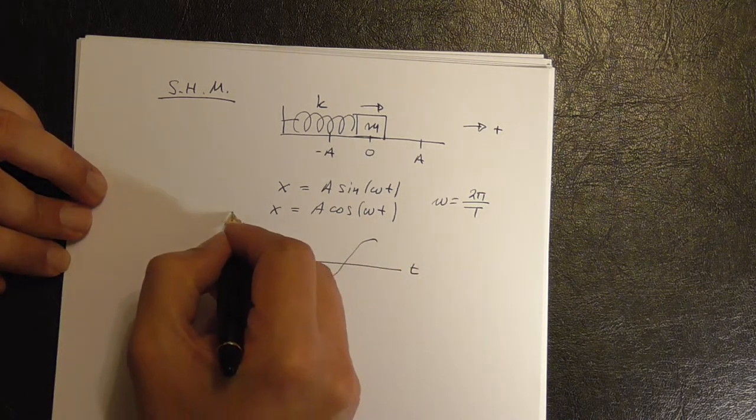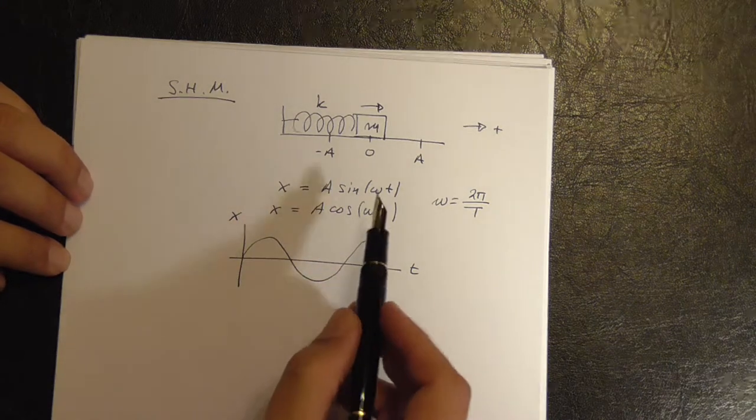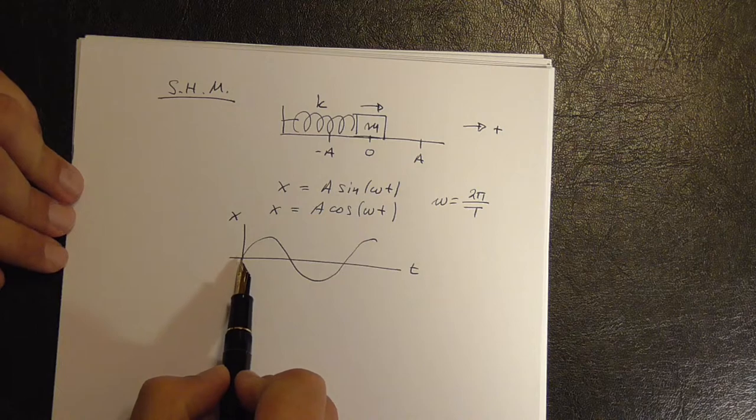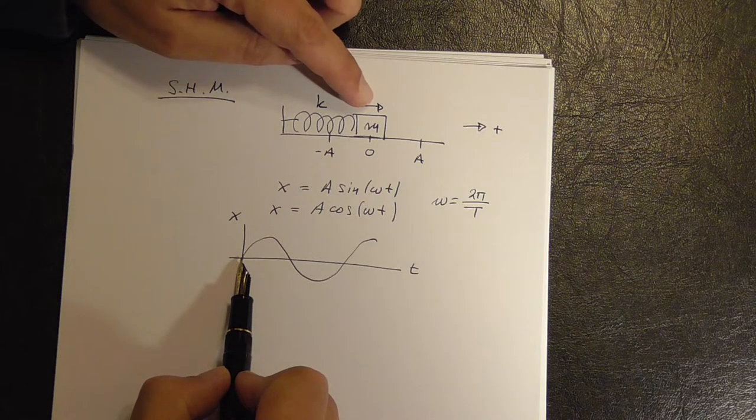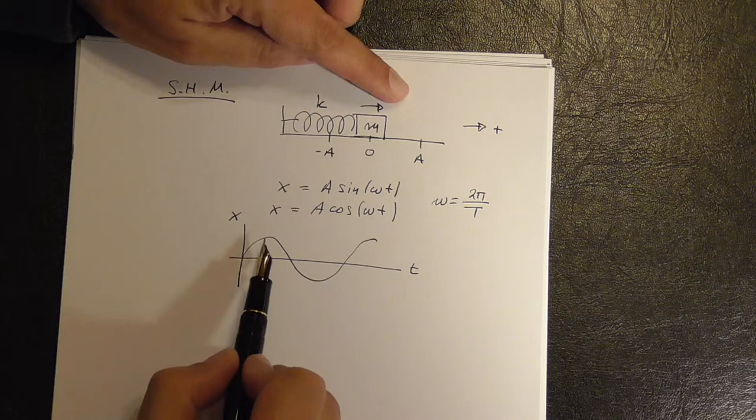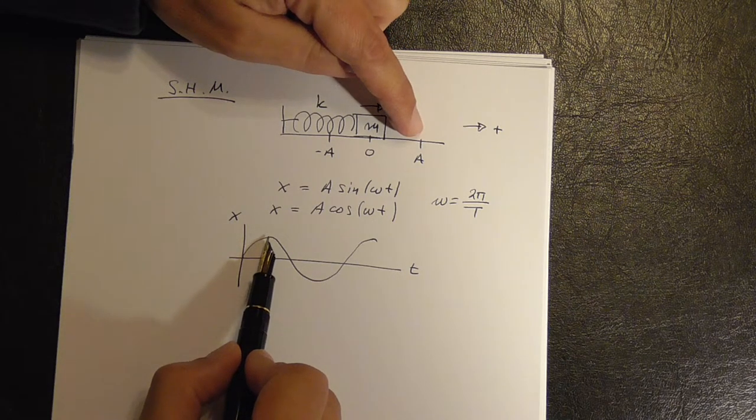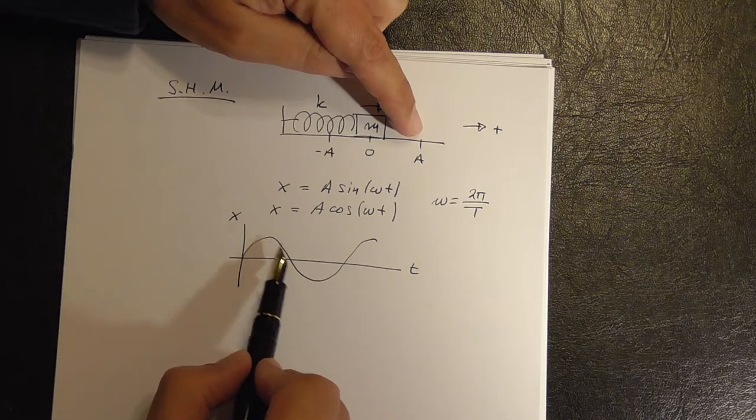So this is the time, this is X. And whether you get a sine or a cosine really depends on the initial conditions. If you start from zero then you will get a sine going to the right. If you start from the maximum displacement you will get a cosine and so forth.